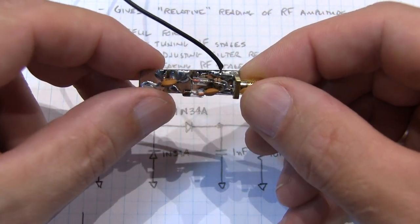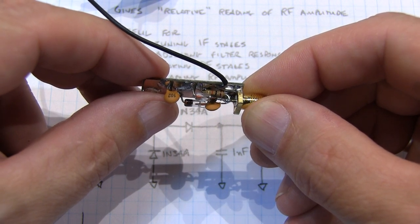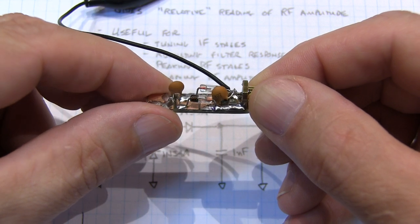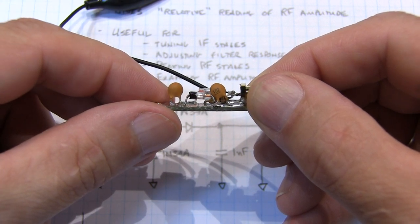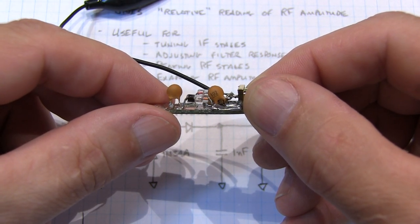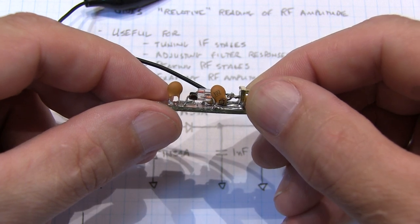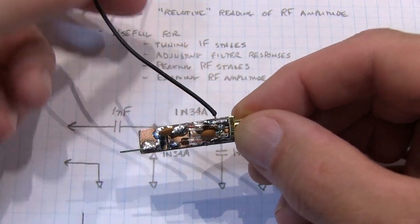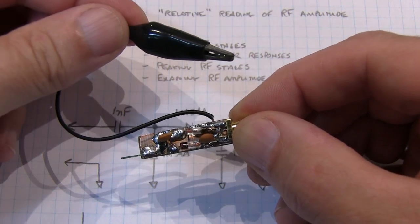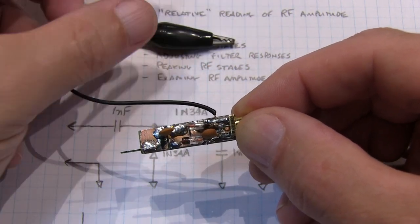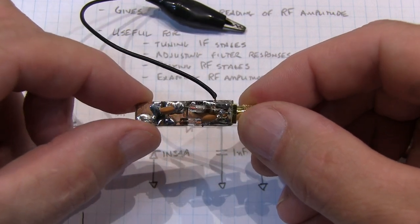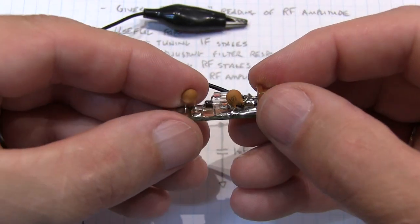And then the other 1N34A diode here is that guy going over to the center pin of the connector. Sitting underneath that diode, if you look carefully, there's the 10K resistor going to ground. And then you can see the other 1 nF capacitor from the center pin going to ground. And that's it. I've attached a little alligator clip ground lead here to connect up to the circuit. Just solder that in. You can use whatever would work for you for ground. But that's the basic construction.